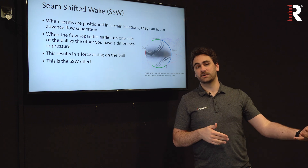Rapsodo's seam shifted wake break metric reports how much of the total break on a pitch is attributed to the seam shifted wake effect. We have both seam shifted wake vertical break and horizontal break. This is not movement added on top of total break — it's how much of that total break was due to the seam shifted wake effect. Seam shifted wake is the difference between how the ball actually moved and how it should theoretically move based on spin, aerodynamics, the Magnus effect, gravity, and drag.